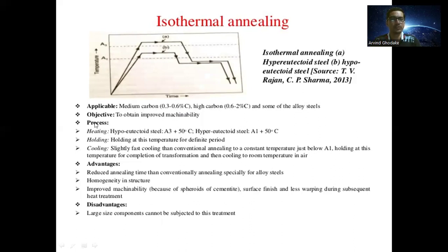The isothermal annealing process includes: heating hypo-eutectoid steel to A3 plus 50°C and hyper-eutectoid steel to A1 plus 50°C; holding at that temperature for a definite period; then slightly faster cooling than conventional annealing to a constant temperature just below the A1 line; holding at that temperature for completion of transformation; and then cooling to room temperature in air.